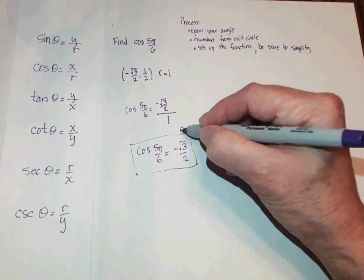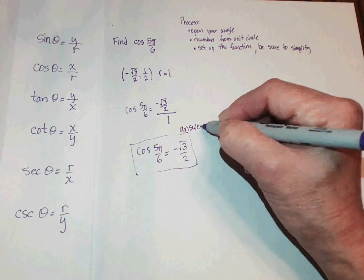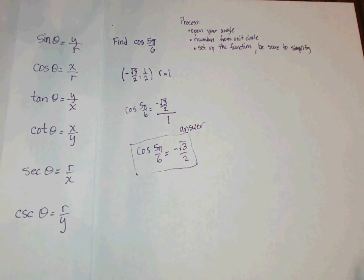That is your answer. And we say the cosine of 5 pi over 6 equals negative square root of 3 over 2.